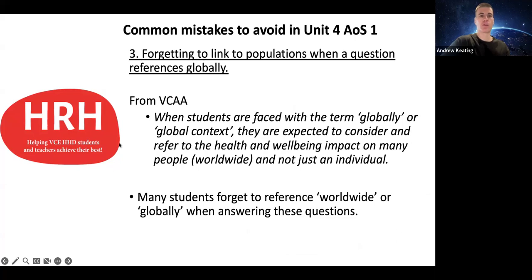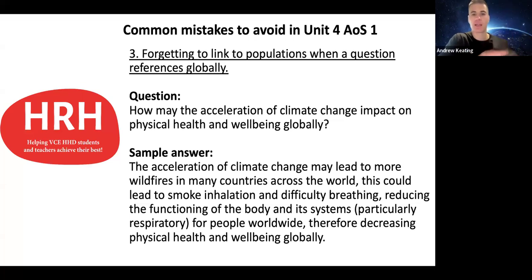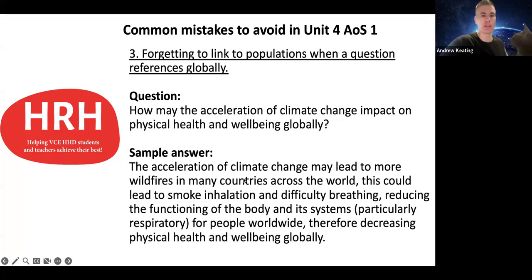The third common mistake is forgetting to link to populations when a question references the term 'globally.' When students are faced with terms like 'globally' or 'global context' in a question, they're expected to consider and refer to health and wellbeing impacting many people worldwide, not just an individual. Many students forget to reference this. For example, the question might be: 'How may the acceleration of climate change impact on physical health and wellbeing globally?' A good answer would say climate change may lead to more wildfires in many countries across the world, causing smoke inhalation and difficulty breathing, which might reduce the function of the body and its systems for people worldwide, and therefore decrease physical health and wellbeing globally. Those references to 'worldwide,' 'globally,' and 'across many countries' ensure your answer incorporates the global scope.